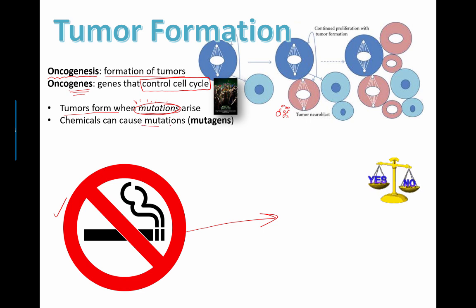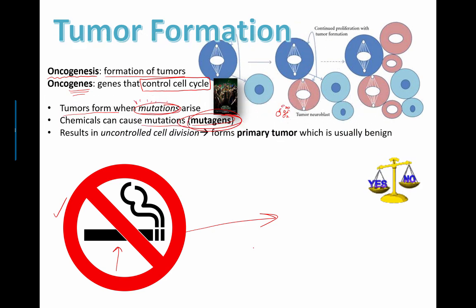Chemicals that cause mutations are called mutagens. And there's a whole bunch of them out there probably in your chemistry lab that you've got to be careful about. Lots of chemicals in cigarette smoke, obviously, that are mutagens and can lead to lung cancer as well. These accumulation of mutations can cause problems in these genes in the oncogenes. And when you have problems in those genes, then cell division can go weird. And you end up with cells that start growing uncontrolled. And then you get a growth of cells, which could be called a tumor.